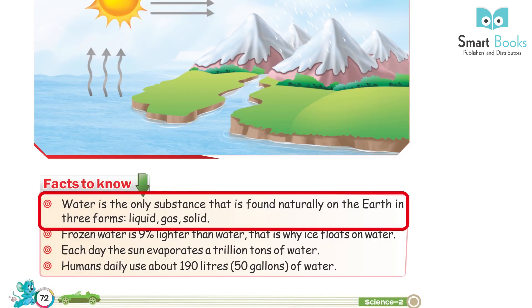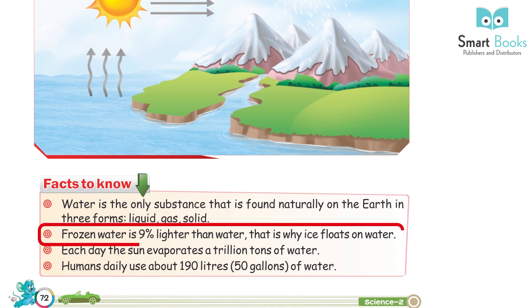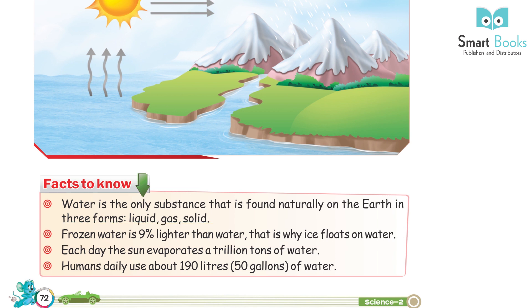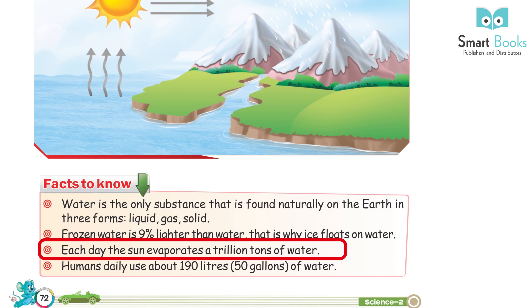Facts to know: water is the only substance found naturally on Earth in three forms — liquid, gas, and solid. Frozen water is 9% lighter than water, which is why ice floats on water. Each day, the sun evaporates a trillion tons of water. Humans daily use about 190 liters of water.